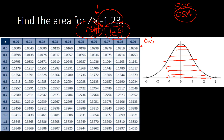Locating 1.23 on the z-table: 1.2 on the row and 3 as the last digit on the column header. We go down and move across — this is the area, which is 0.3907.